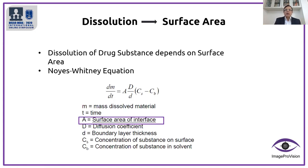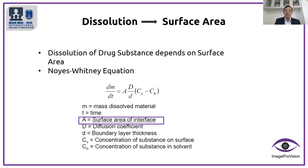Let us try to establish the main topic. We have seen that particle size and shape has some influence on surface area, and surface area has a great influence on dissolution. The dissolution of a drug substance depends on surface area, as established in the Noyes-Whitney equation: dm/dt equals A — the surface area of the interface — times the diffusion coefficient divided by boundary layer thickness, multiplied by the difference in concentration of the substance at the surface versus in the solvent. This equation gives us the correlation between the rate of dissolution and surface area.